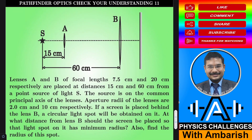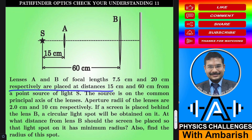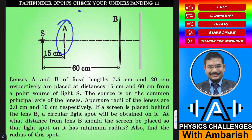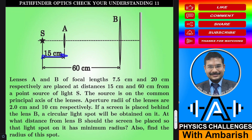Here's the problem. Lenses A and B of focal length 7.5 centimeter and 20 centimeter respectively are placed at distances 15 centimeter and 60 centimeter from a point source of light S. So focal length of lens A is 7.5 centimeter, focal length of lens B is 20 centimeter. This distance is 15 centimeter and this distance is 60 centimeters.